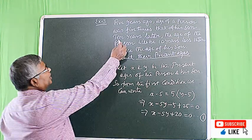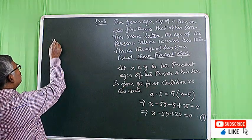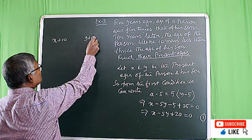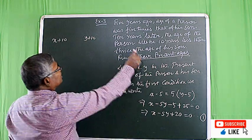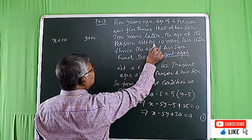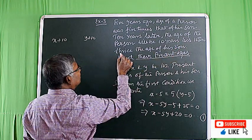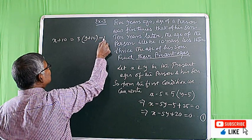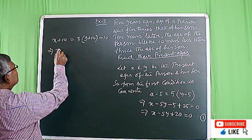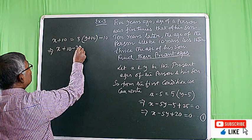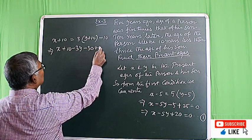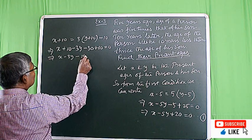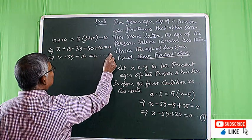Ten years later, the age of the person will be X plus 10 and the age of the son will be Y plus 10. The given condition is that the age of the person will be 10 years less than 3 times the age of his son, so it will be 3 times Y plus 10 minus 10 years. This implies X plus 10 minus 3Y minus 30 plus 10 equal to 0, which implies X minus 3Y minus 10 equal to 0. Suppose it is equation number 2.